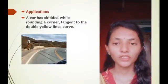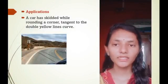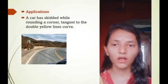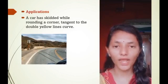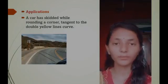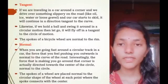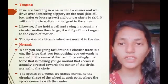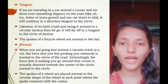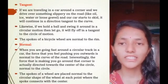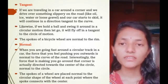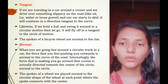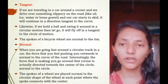Next point of my presentation is application. A car has skidded while rounding a corner tangent to a double yellow line curve as shown in the figure. If we are traveling in a car around a corner and we drive over something slippery on the road like oil or water and our car starts to skid, it will continue in a direction tangent to the curve.